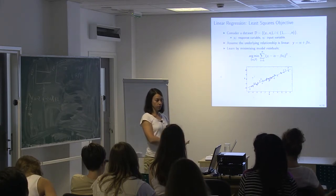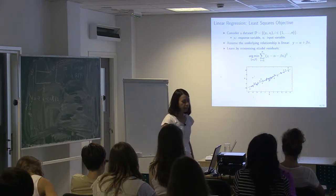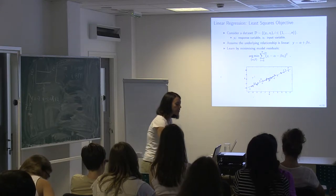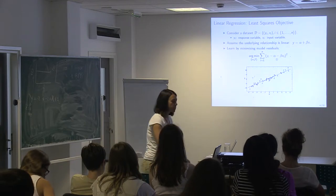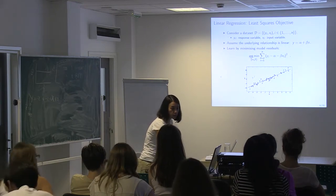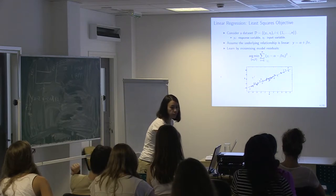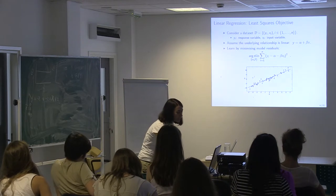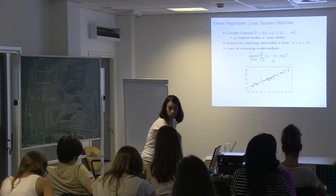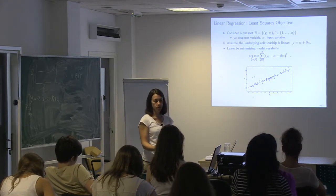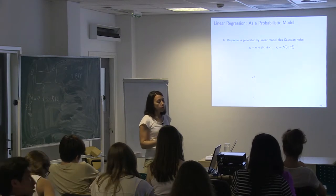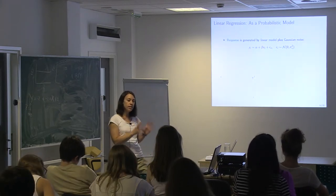Now we're going to see how we can derive a very similar algorithm. This equation says we have some arguments — arg — and we want to minimize this function with respect to alpha and beta. We want to find the alpha and beta values that minimize this function, which is a sum over all individuals.